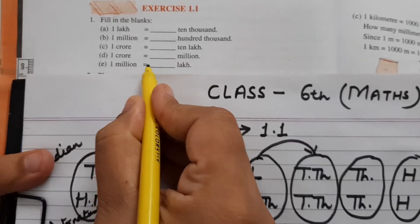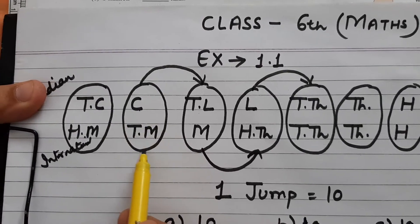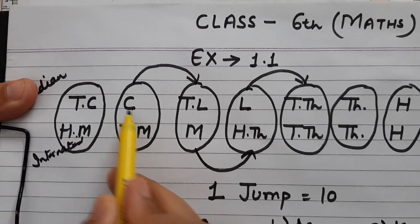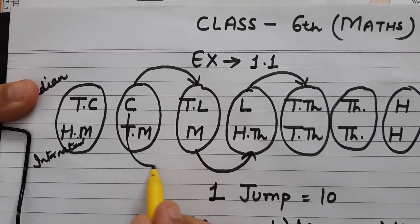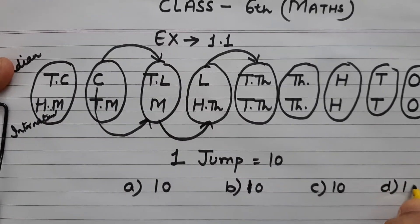b part, one crore equals to dash million. देखें, ये crore, और पूछा गया है million. ये crore का घर है, ये million का. तो jump कितनी लग रही है? One. तो answer is ten.